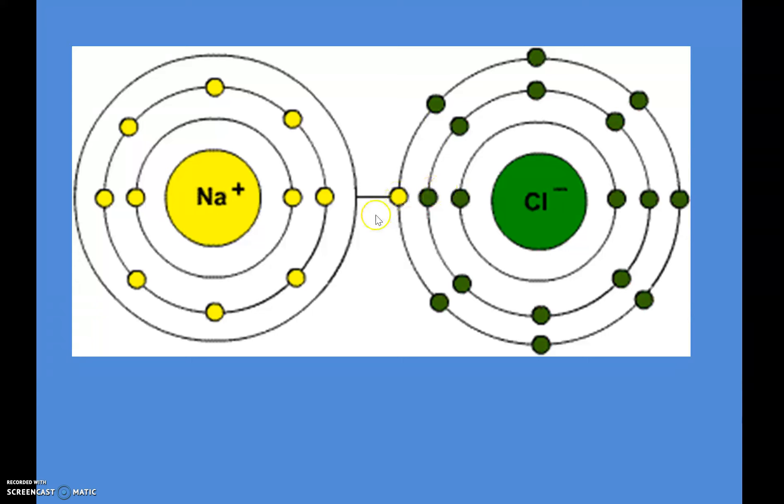When these two get together, the sodium takes its one electron and gives it to the chlorine. That would make them both happy; both their shells are full. When it gives that electron over, it becomes a positively charged ion because it gave away some negativity. The chlorine becomes negatively charged because it took on that negative electron.